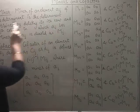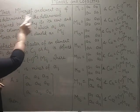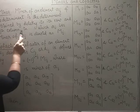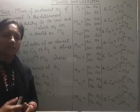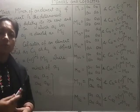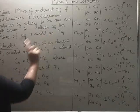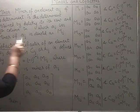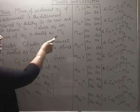Minor of an element aij of a determinant — that means if there is an element in the i-th row and j-th column — is a determinant obtained by deleting its i-th row and j-th column. So if I am talking about a11 and I have to obtain its minor, I will delete the first row and first column, because for a11, i equals 1 and j equals 1. We use the notation capital M with subscript ij for the minor.